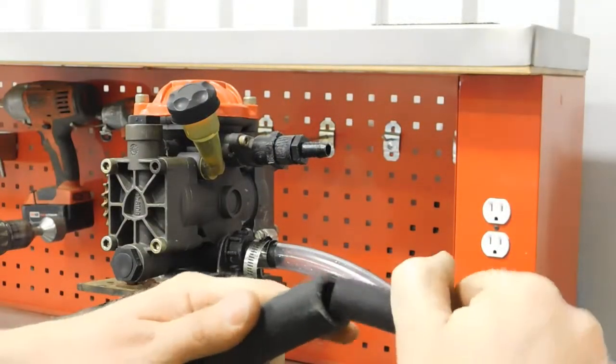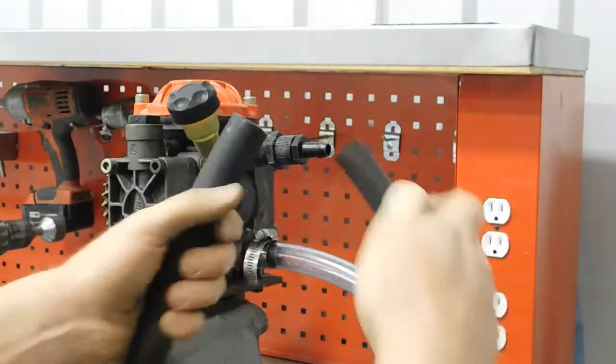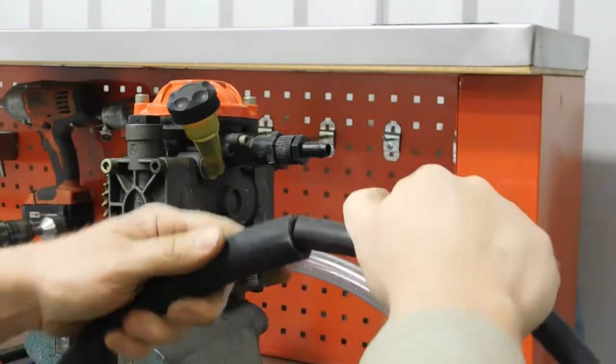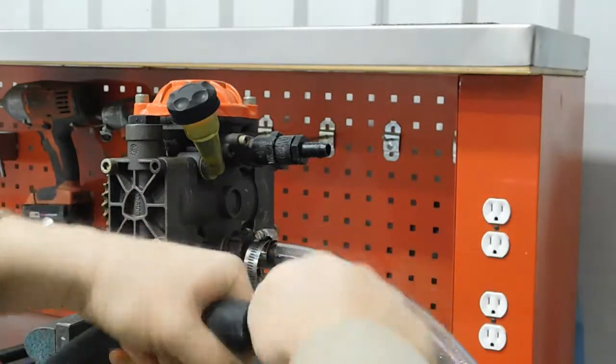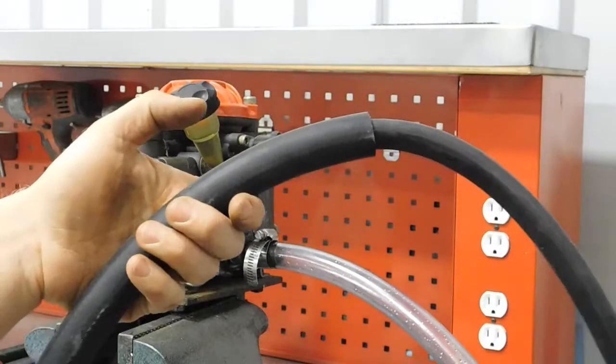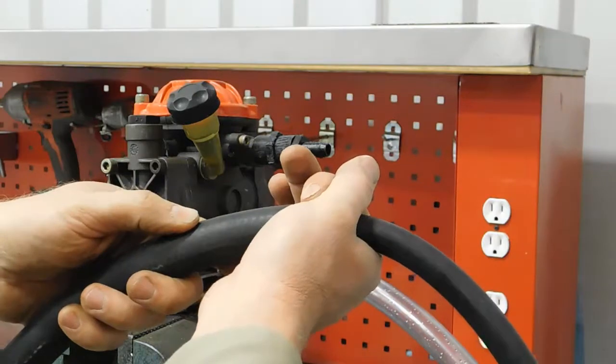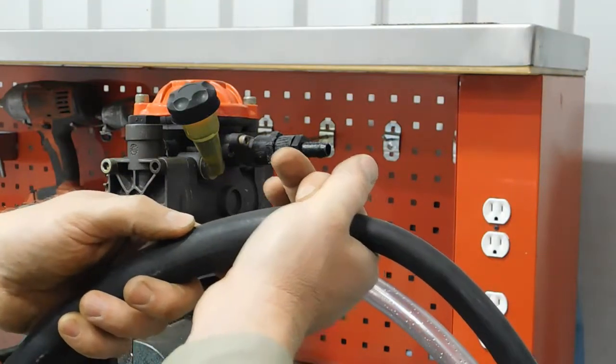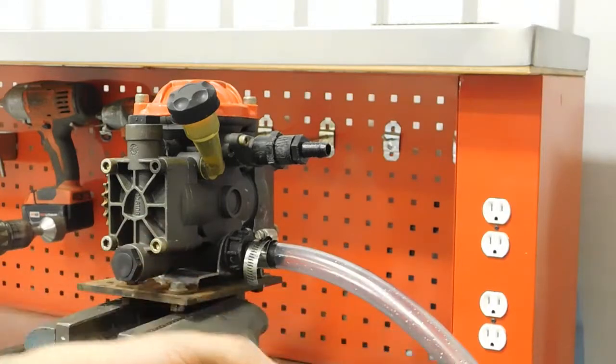I would also take your half-inch line, your three-quarter line at the pump, slide the two together, shove a good couple inches one inside the other, and you can even clamp or zip tie that to keep dirt and insects from getting inside the lines.